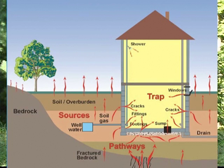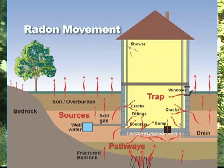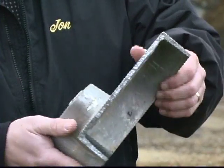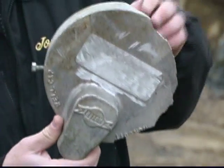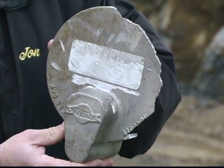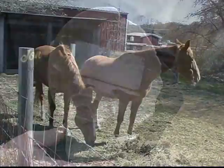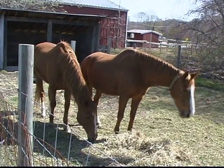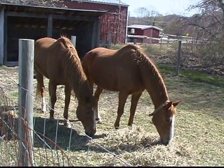Radon is another naturally occurring contaminant, which at high enough levels can be a health concern. Bacteria are also naturally occurring. A malfunctioning well or a well in disrepair may be contaminated with bacteria. Bacteria can also come from mismanaged human waste and animal waste.